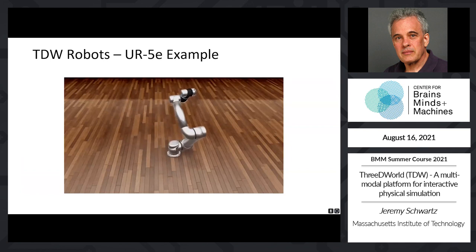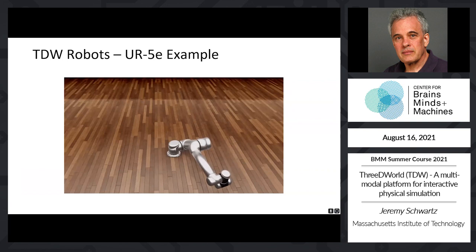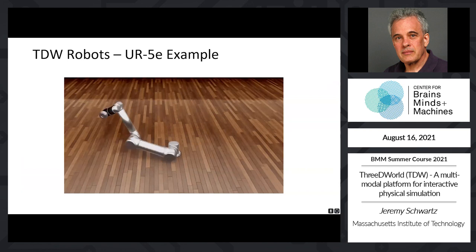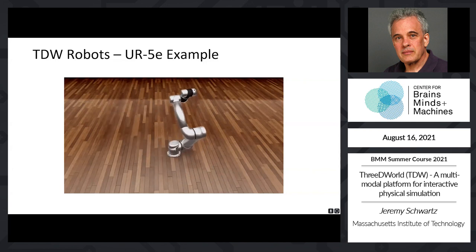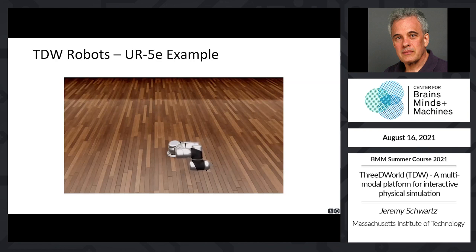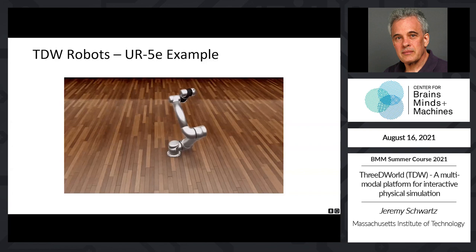In this example, the movement of the UR5 robot arm is being controlled through a series of low-level API commands that drive the revolute joints of the arm. By using these low-level commands, users could potentially build higher-level interaction behaviors like those provided by the MagnaBot API.